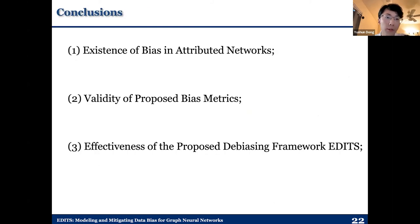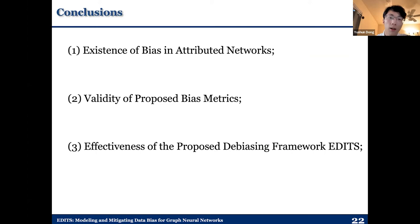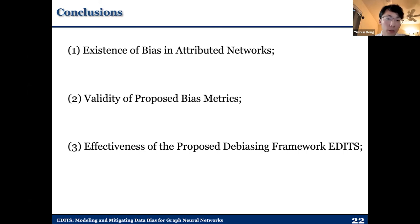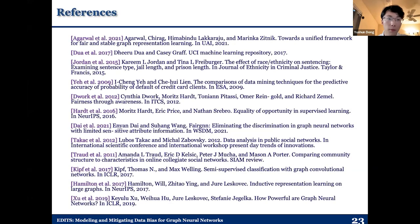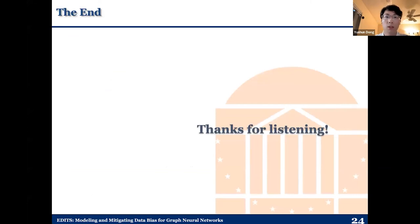Here come our three conclusions. First, based on our preliminary analysis, we conclude that input attributed networks for GNNs are significant sources of bias. Second, due to similar tendencies observed in our debiasing experiments on both our proposed bias metrics and traditional bias metrics, we corroborate the validity of our proposed bias metrics. Third, due to a satisfying trade-off between utility performance and fairness performance, we corroborate the effectiveness of the proposed debiasing framework EDITS. That's all for my presentation, and I'd be happy to answer questions from the audience.